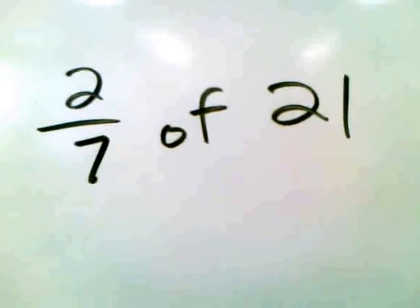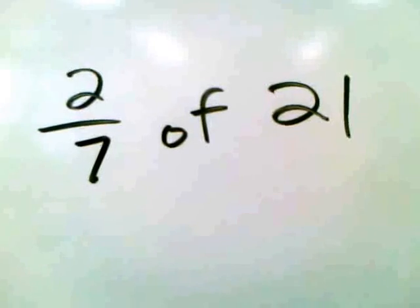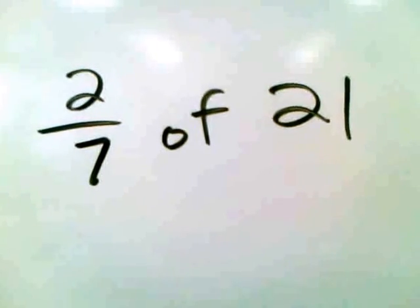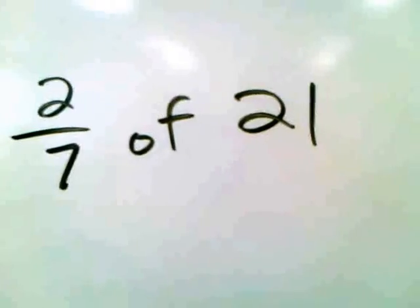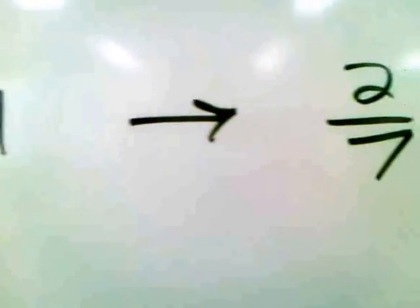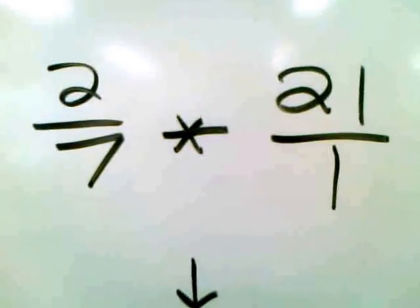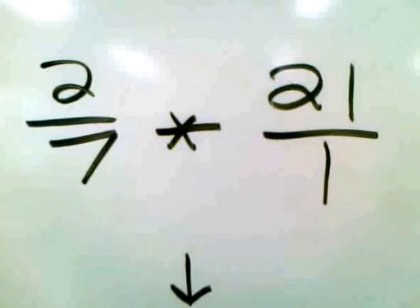To solve this problem, make two simple changes. First, replace the of with a multiplication symbol. And second, change 21 into a fraction. That would look like this: 2/7 times 21 over 1.